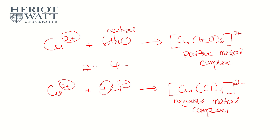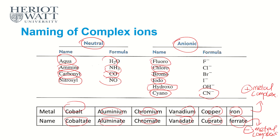So this is the difference between negative and positive metal complexes. If you have a positive metal complex, the metal name stays as usual: cobalt, aluminum, chromium, vanadium, copper, and iron. But if you have a negative metal complex, the metal name changes — it ends with -ATE: cobaltate, aluminate, chromate, and vanadate.